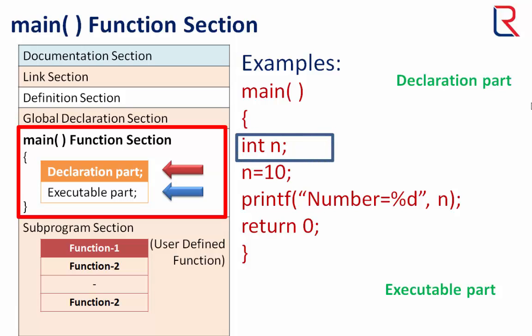Here is an example which is showing both parts of the main function. We always declare all variables before the executable part in C language.